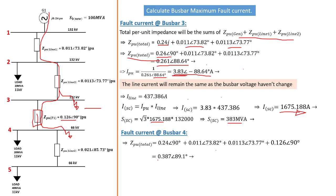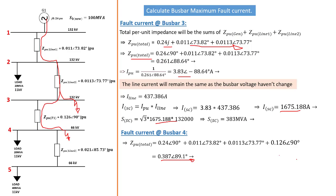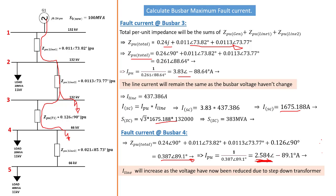Calculating our I per unit from the Z per unit total gives us a value of 2.584 at an angle of minus 89.1 degrees. As stated, we are only concerned about the magnitude, which is 2.584. Moving on, I line will increase since the voltage has been reduced by the step-down transformer.